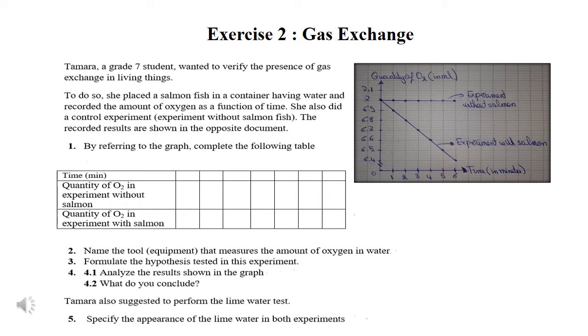Again, pause this video and try to do this exercise. Tamara, a grade 7 student, wanted to verify the presence of gas exchange in living things. What do we mean by gas exchange? Yes, the absorption of oxygen and the release of carbon dioxide. So, to do so, she placed a salmon fish in a container having water and recorded the amount of oxygen as a function of time. She also did a control experiment, experiment without salmon fish. The recorded results are shown in the opposite document.